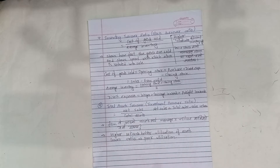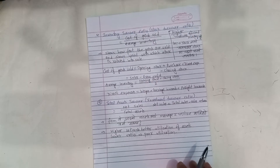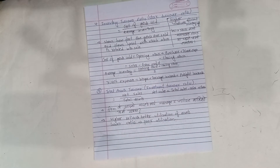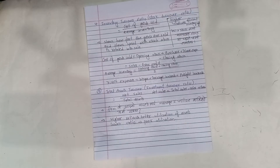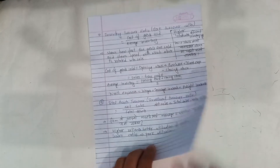A higher inventory turnover ratio means lower inventory on hand. The total assets turnover ratio is net sales divided by total assets. It shows how efficiently a firm's assets are being utilized. Net sales equals total sales minus sales returns. Net sales divided by total assets gives the total assets turnover ratio.